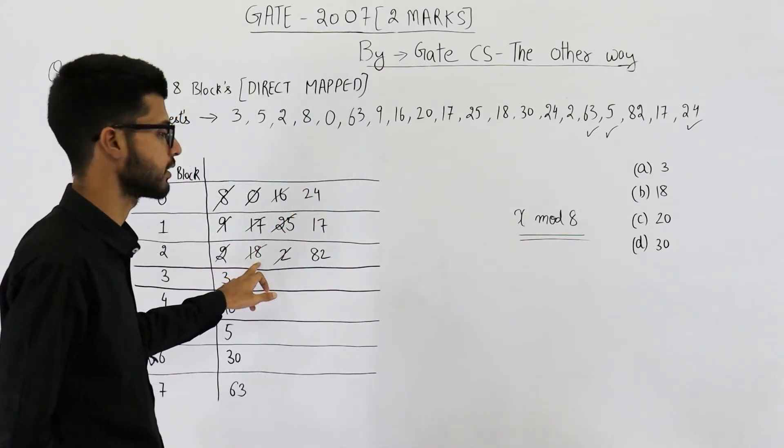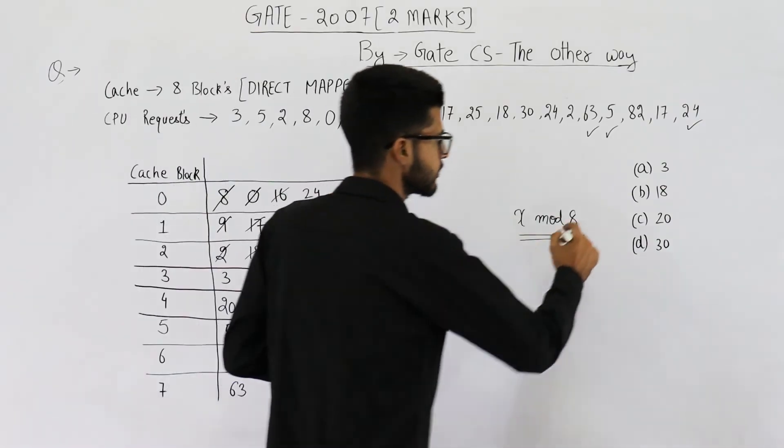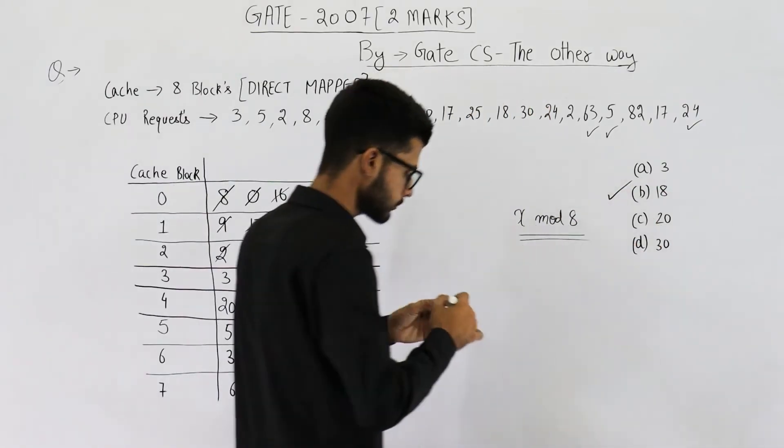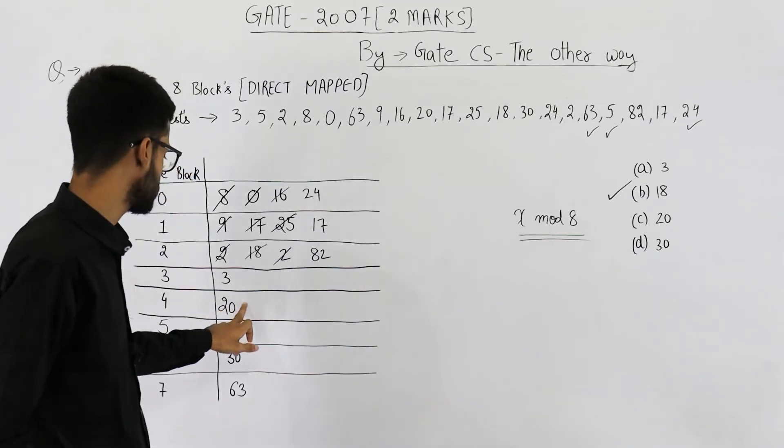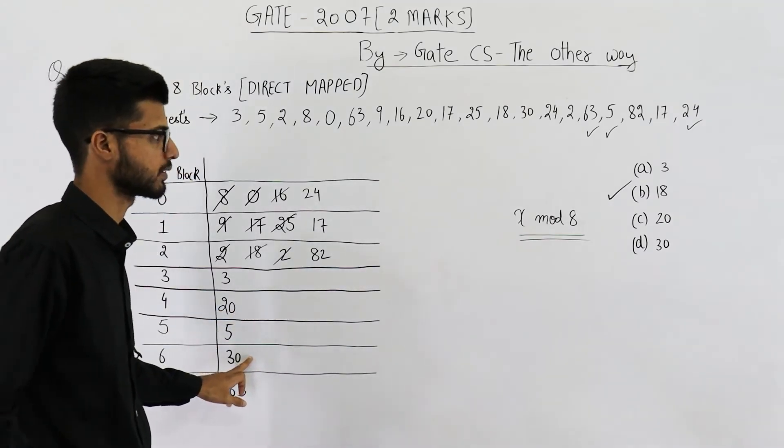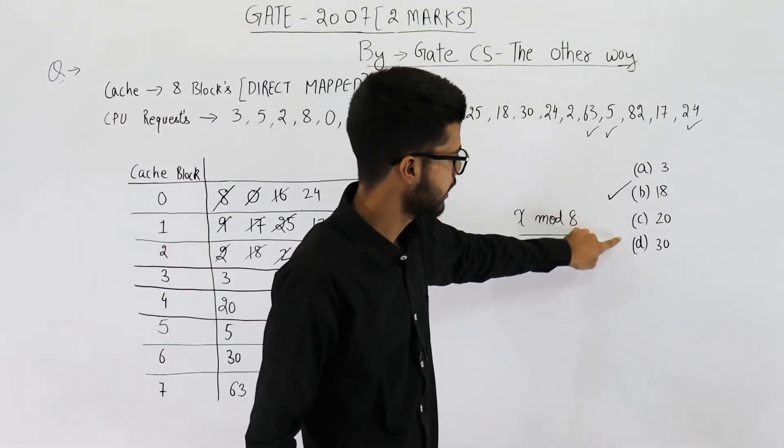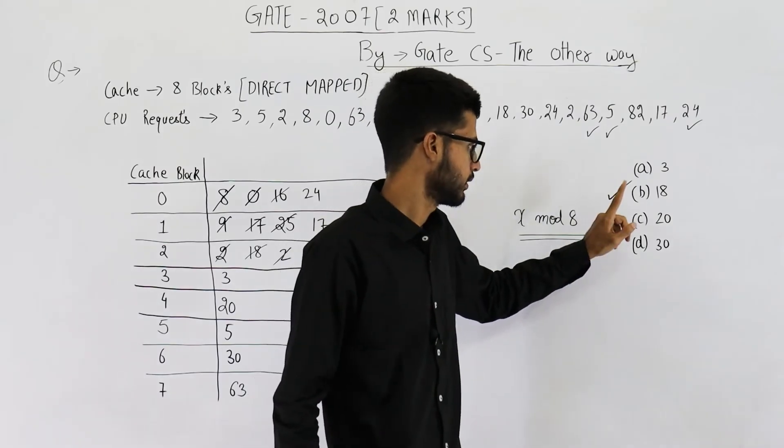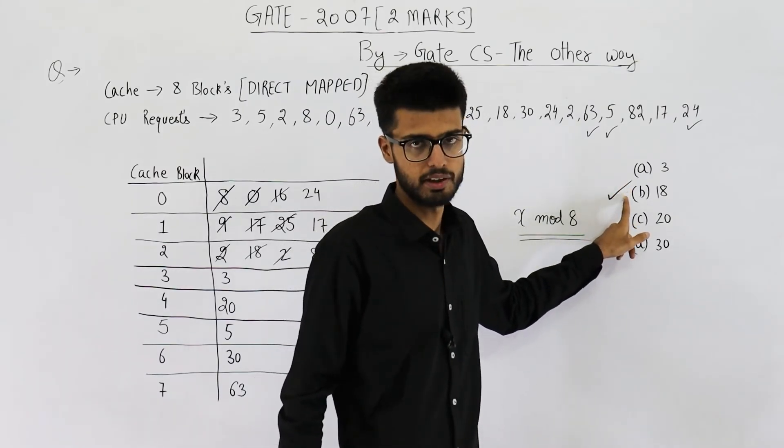18 is not present in cache. It is replaced. So your answer is option B, 18. C and D are 20 and 30. 20 is present as well as 30 is also present. So A, C and D are present in cache. That means your answer is option B, 18.